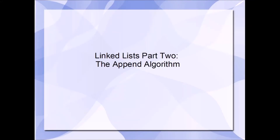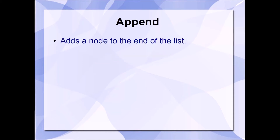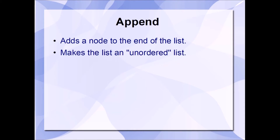Welcome to part two of my video series on the linked list data structure. In this video, we will discuss the append algorithm for linked lists. The append algorithm is responsible for adding a new node to the end of the linked list. Since the node is always added to the end of the list, this means that the append method will make the list an unordered list.